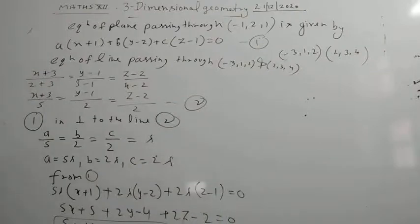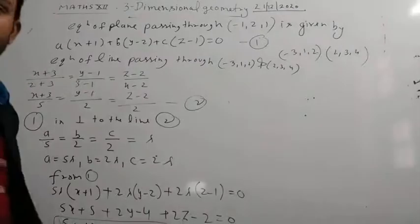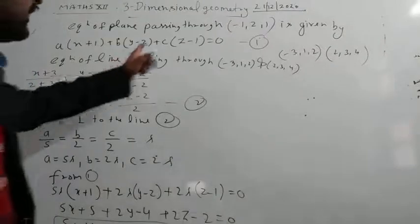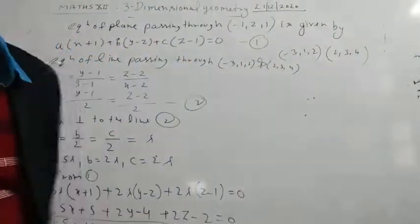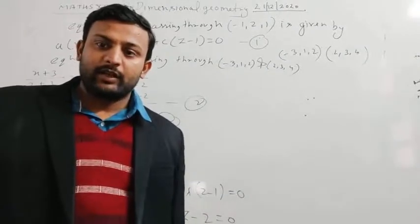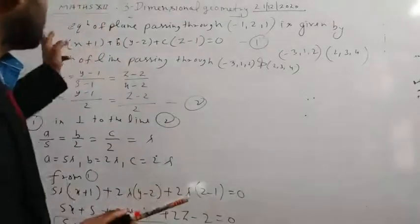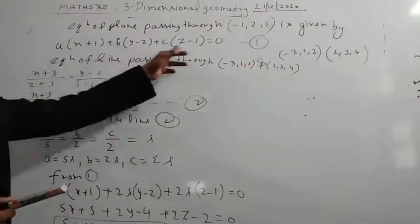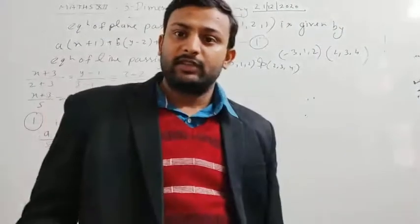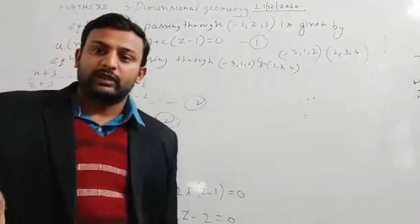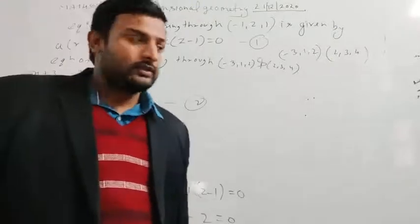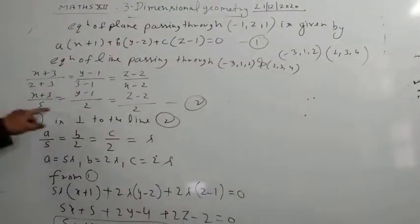I hope you understand. In this question, we had to find the equation of the plane passing through (-1, 2, 1) and perpendicular to the line joining the two given points. First we wrote the equation of plane through one point, then we found the equation of the line through the two points using the formula (x minus x1)/(x2 minus x1) = (y minus y1)/(y2 minus y1) = (z minus z1)/(z2 minus z1).